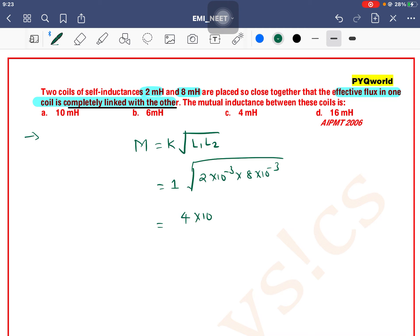4×10^-3, which equals 4 millihenry. The answer is option C.